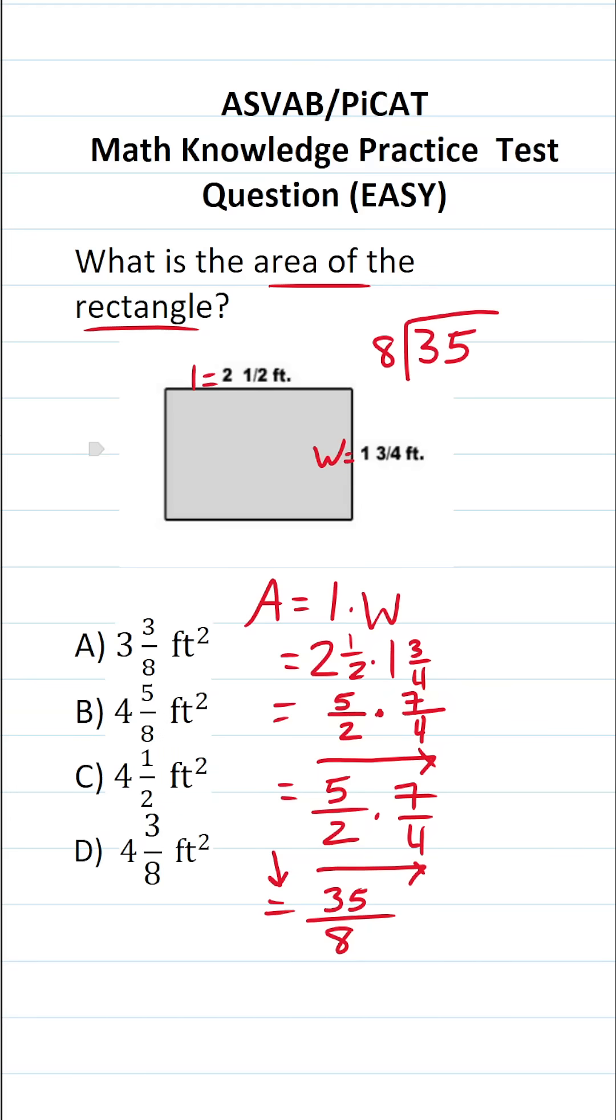How many times does 8 go into 35 without going over? Well, 8 times 4 is 32. 35 minus 32 is 3. And just like that, we have enough information to write our mixed number.